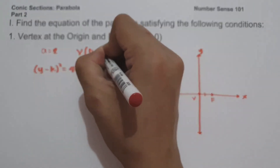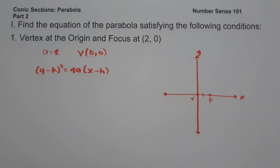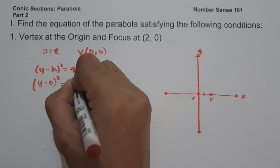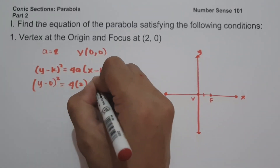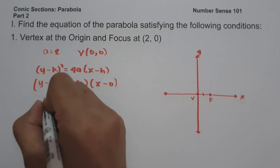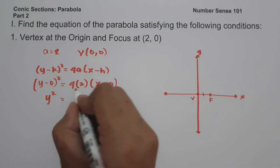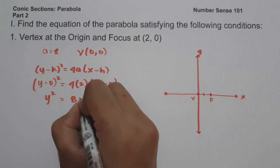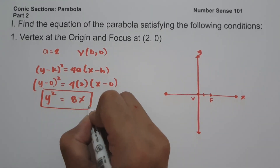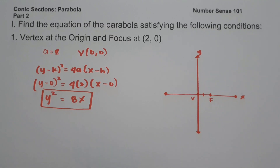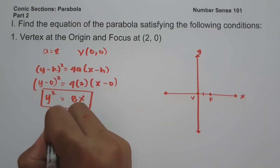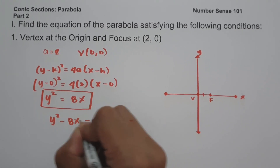Our vertex is at (0, 0). So we have (y − 0)² = 4 × 2 × (x − 0). That gives us y² = 8x. This is the standard form of the equation of the parabola. If you want to write the answer in general form, move 8x to the side of y²: y² − 8x = 0.